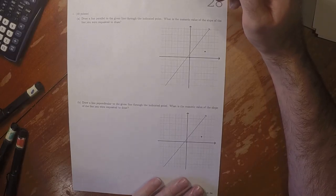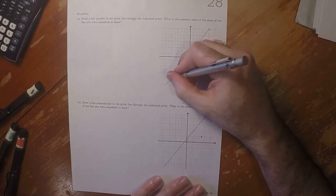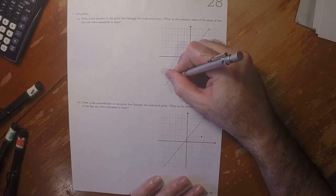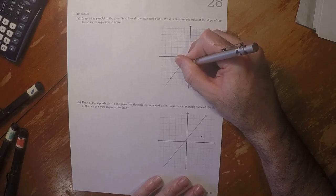The question also says, what is the numeric value? Well let's check. Here I can see two points that are on the line. There's one and there is another.